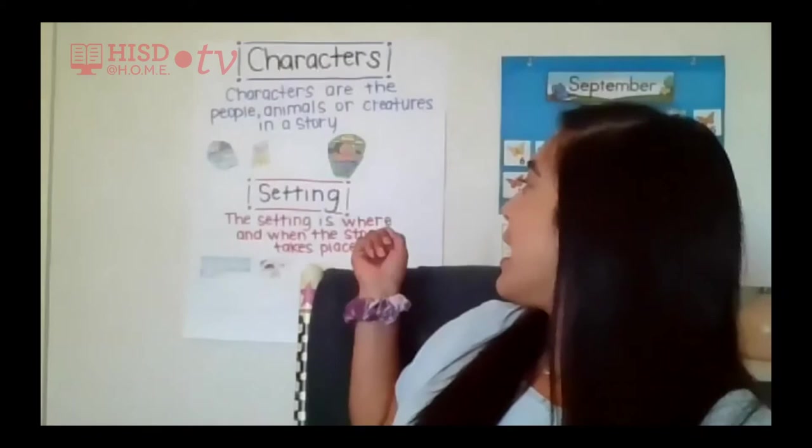I'm so excited to be meeting with you. Last time we met, we talked about characters and setting, and I hope you had an opportunity to read a just right book and find the many characters and settings in your story. Remember, we discussed that characters are people, animals, or creatures in a story. We also talked about the setting — the setting is where and when a story takes place. Can you tell me about the books that you read and the characters and settings that you found?